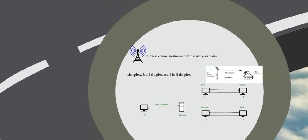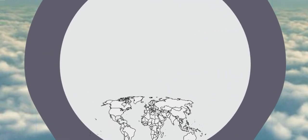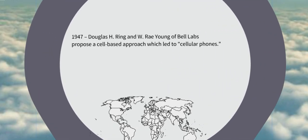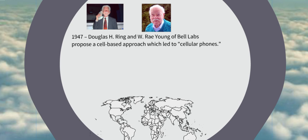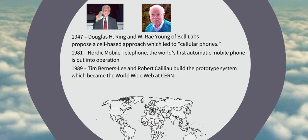Post-1940s, the era of wireless communication was booming. Here is the timeline of key events in the history of wireless communication. In 1947, Douglas H. Ring and W.Y. Young of Bell Labs proposed a cell-based approach which led to the invention of cellular phones. In 1981, Nordic Mobile Telecommunication in Europe became the world's first automatic mobile telephone in operation. In 1989, Tim Berners-Lee built the prototype system which became the World Wide Web at CERN in Geneva. And in 1991, GSM was put into operation with bandwidth up to 64 kbps which was the beginning of 2G and the beginning of all the internet that we are able to use in the phone as of today.